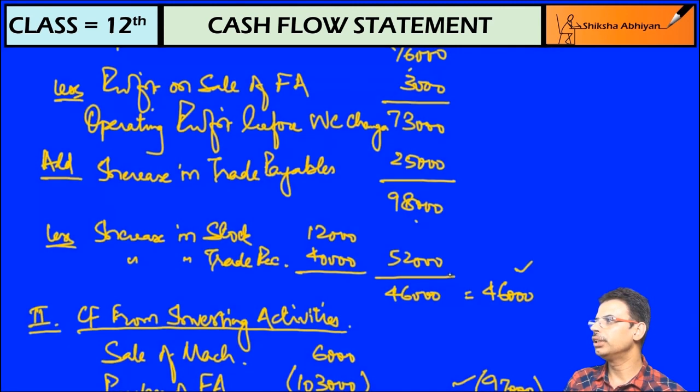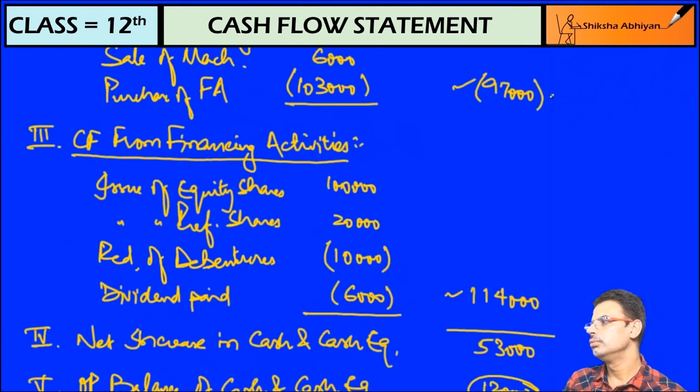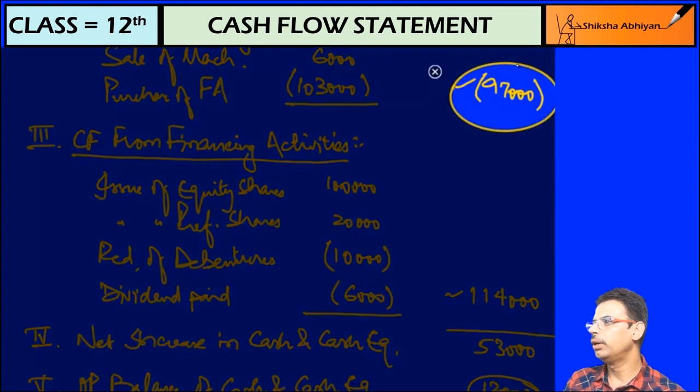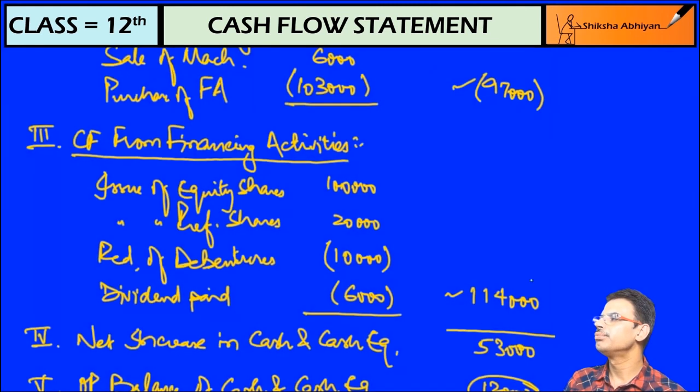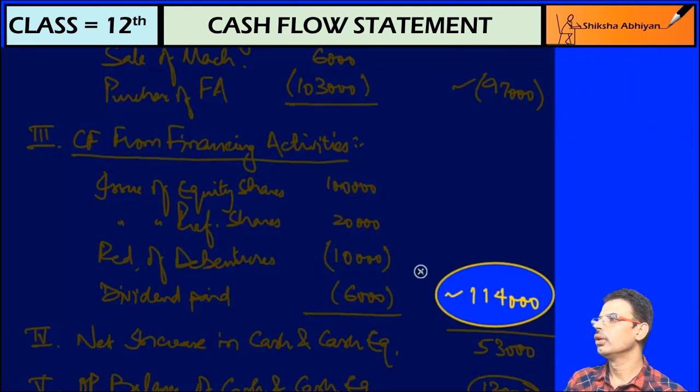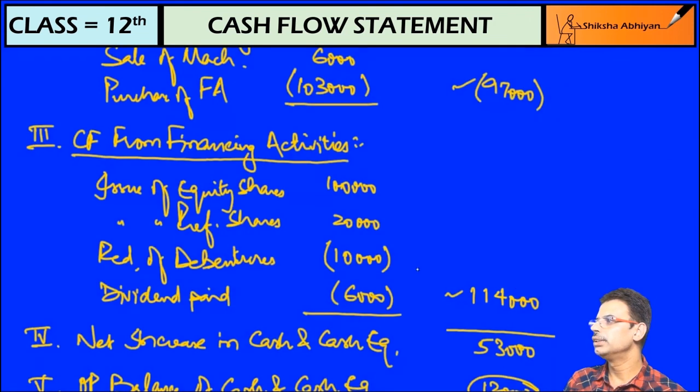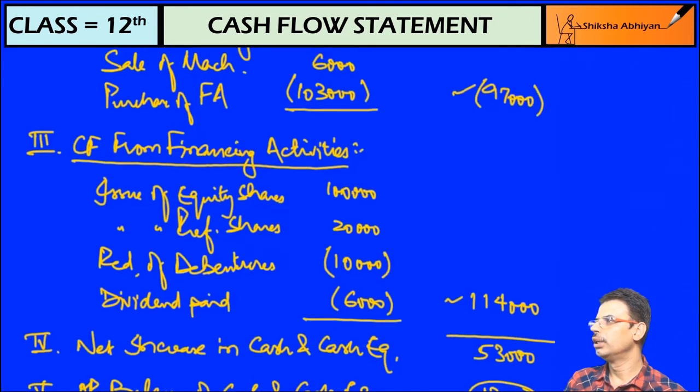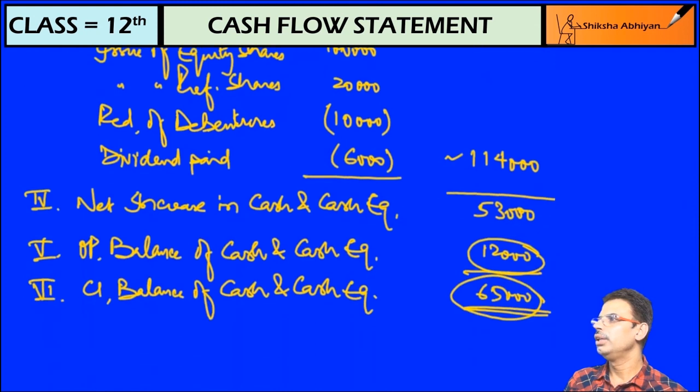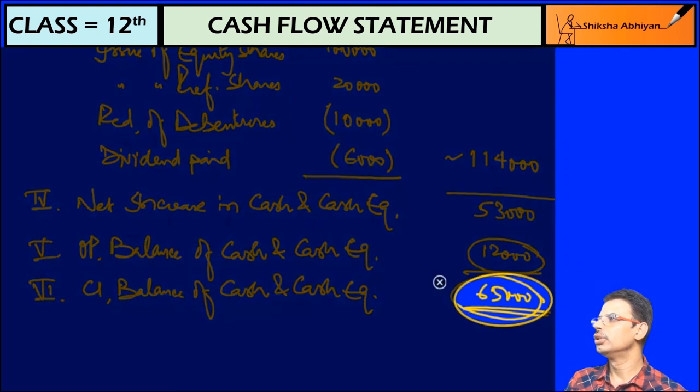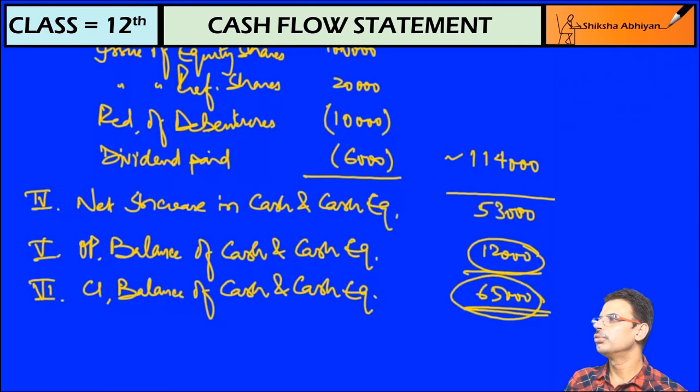Operating activity, our investing activities 97,000, this figure was also negative. And number three financing activities which is 114,000 rupees, this figure. And after that 65,000 is the answer. Okay, done.